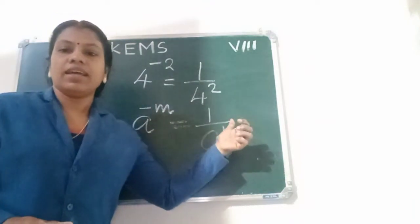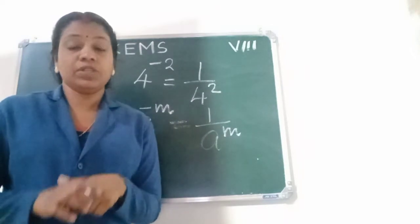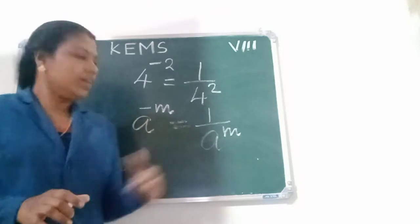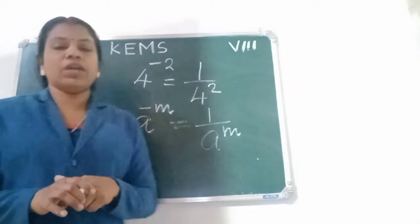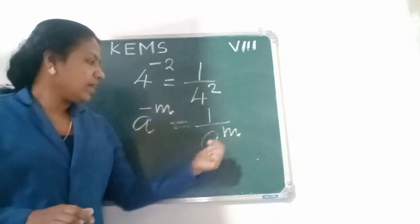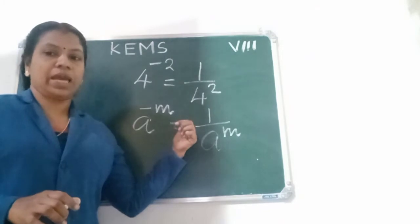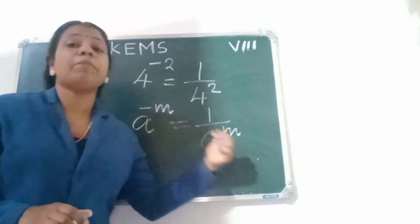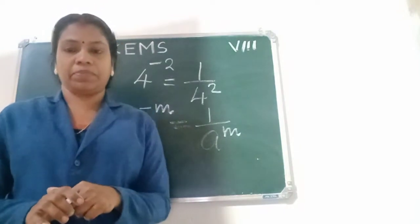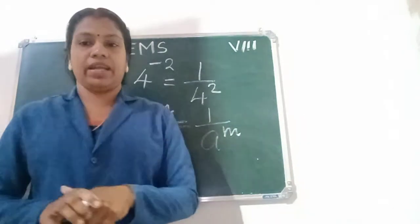Here, M is a non-zero integer. So, A power minus M equals 1 by A power M. A power minus M is the multiplicative inverse of A power M.